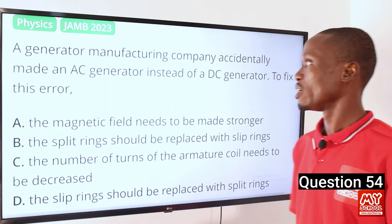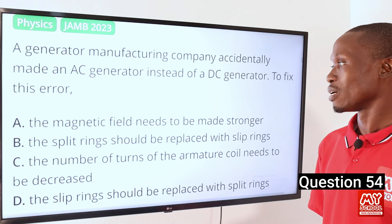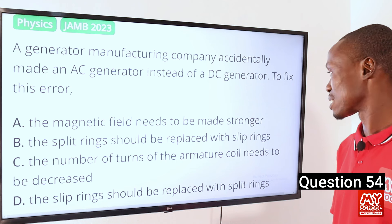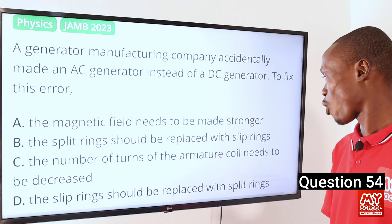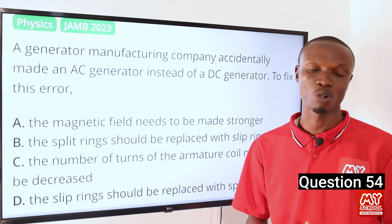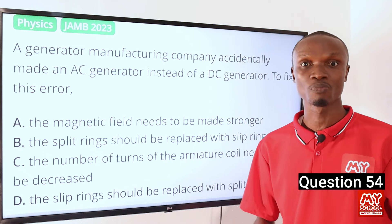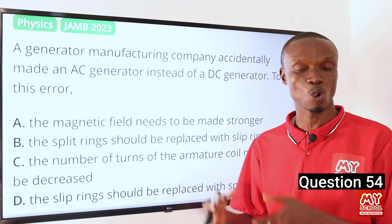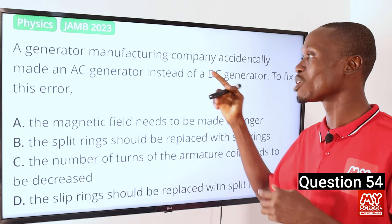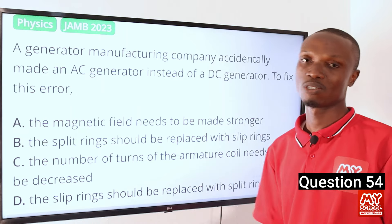Question 54. A generator manufacturing company accidentally made an AC generator instead of a DC generator. To fix this error: A, make the magnetic field stronger; B, replace the split rings with slip rings; C, decrease the number of turns of the armature coil; or D, replace the slip rings with split rings. An AC generator uses slip rings to transfer induced current to the circuit, while a DC generator uses split rings. So the answer is option D — replace the slip rings with split rings to create a DC generator.